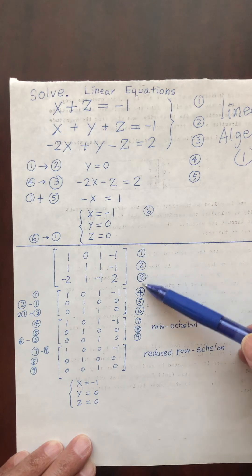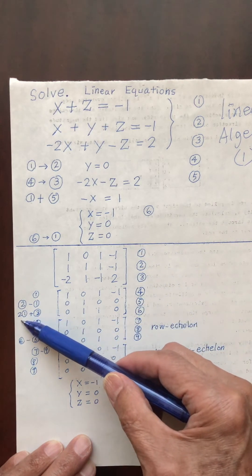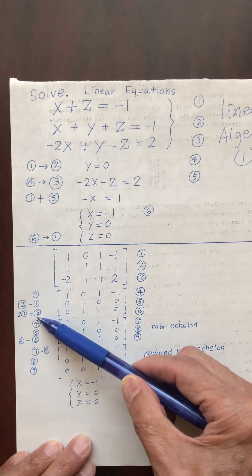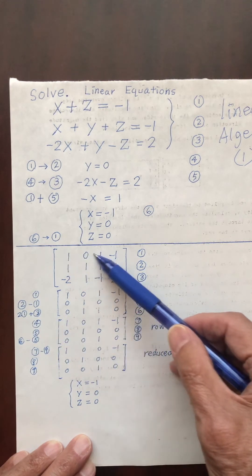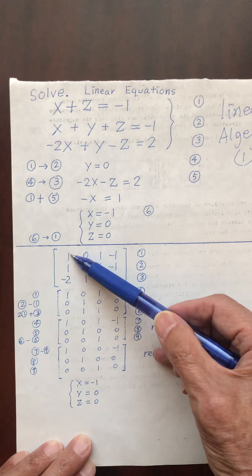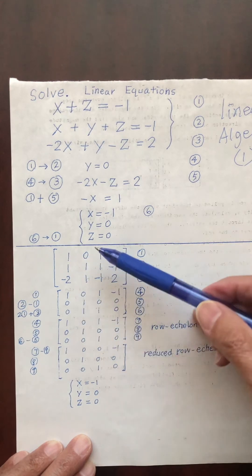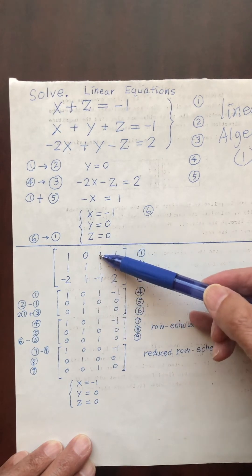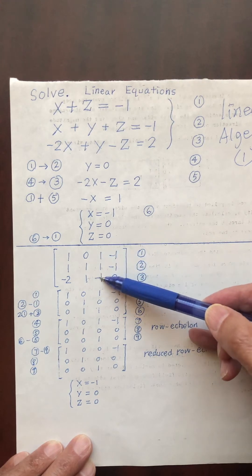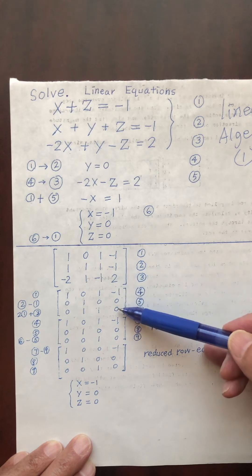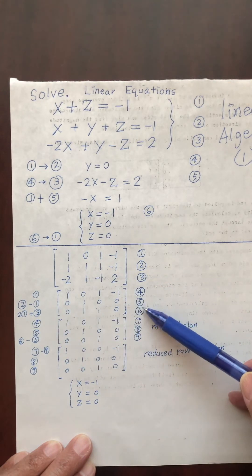For the next row I do 2 times row 1 plus row 3. So 2 times 1 plus negative 2 is 0; 2 times 0 plus 1 is 1; 2 times 1 plus negative 1 is 1; 2 times negative 1 plus 2 is 0. I call this line 6.